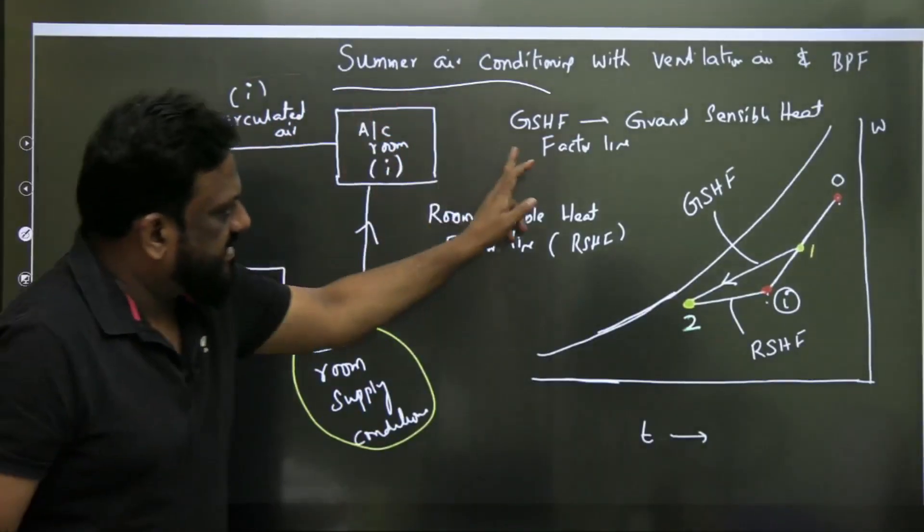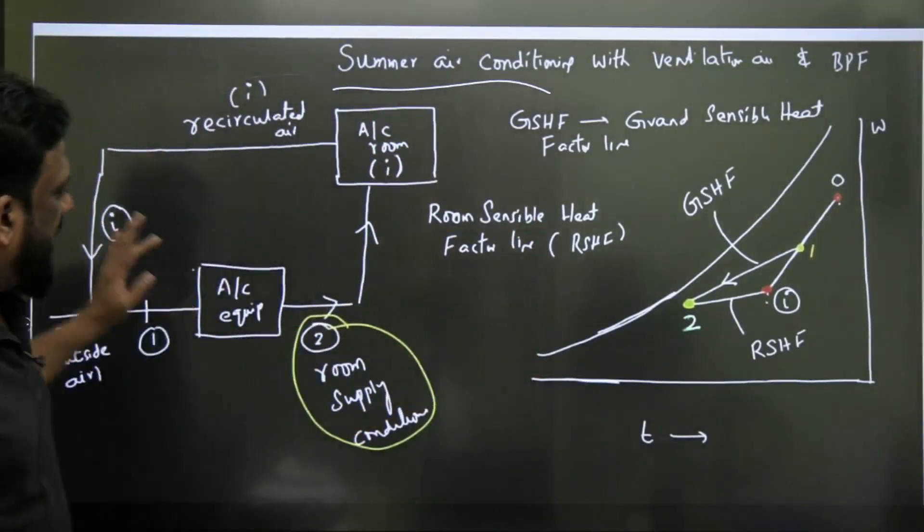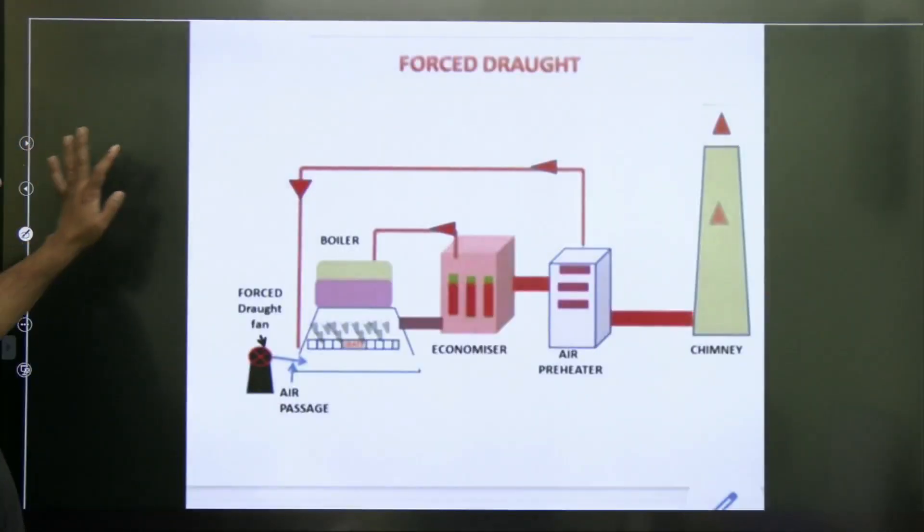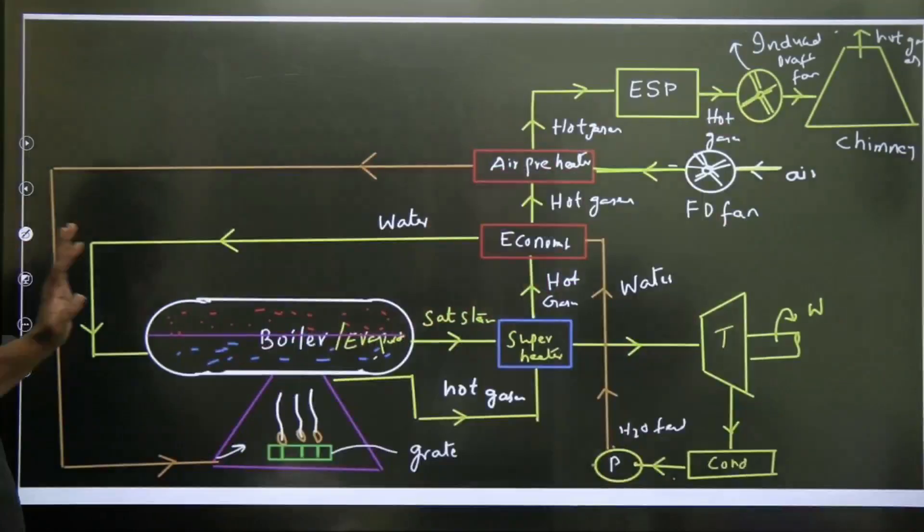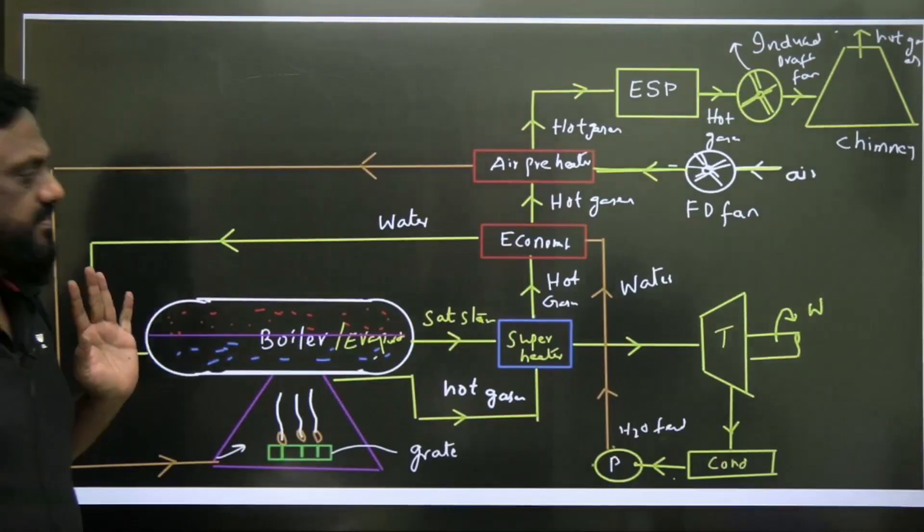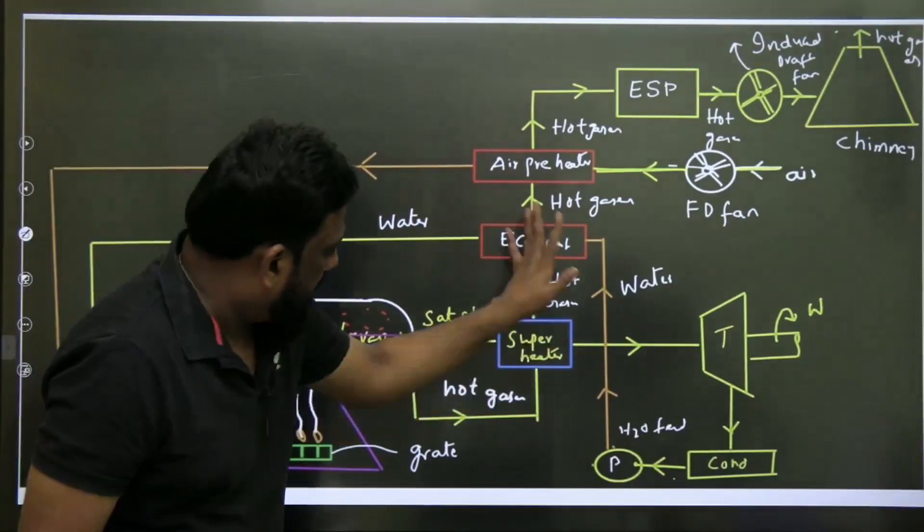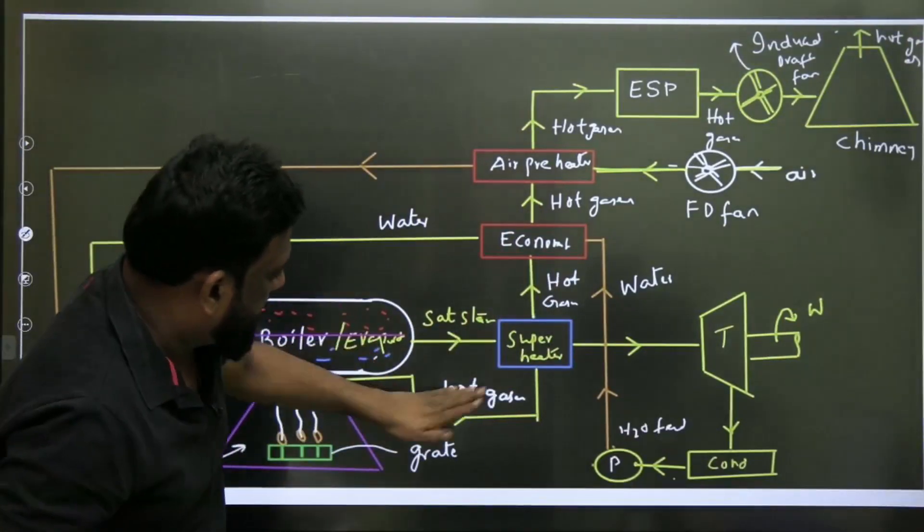Then this is again your air conditioning from RAC. Yes, summer air conditioning, grand sensible heat factor, room sensible heat factor, everything I discussed very neatly. And this is again from power plant, which is important from your engineering services point of view. All devices are beautifully given. The flow is given.